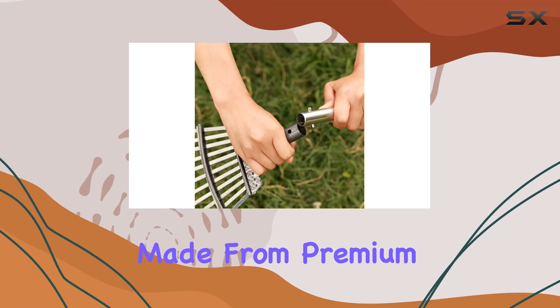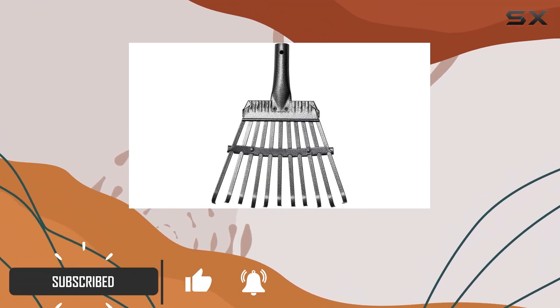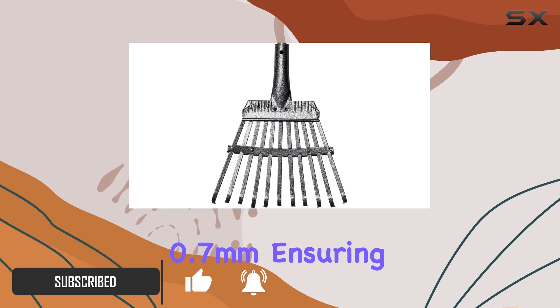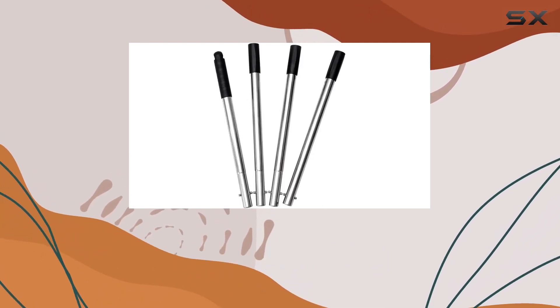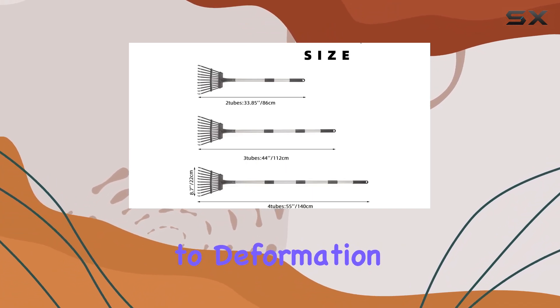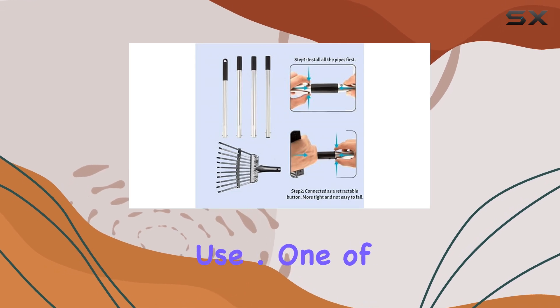This rake is made from premium materials, featuring tines constructed from 50# steel wire with a thickness of 0.7 millimeters, ensuring durability and strength. The stainless steel handle is resistant to deformation and rust, making this rake a reliable choice for long-term use.